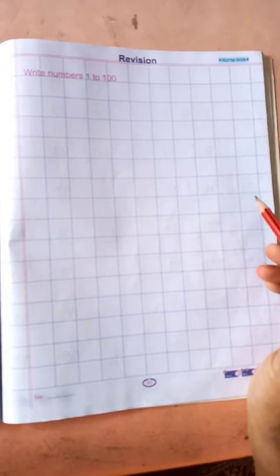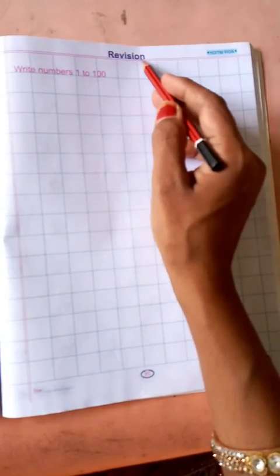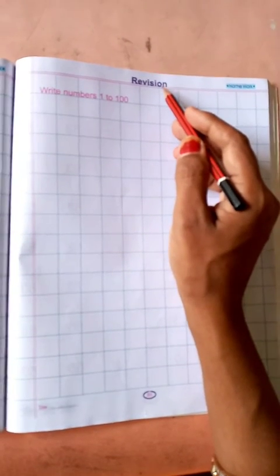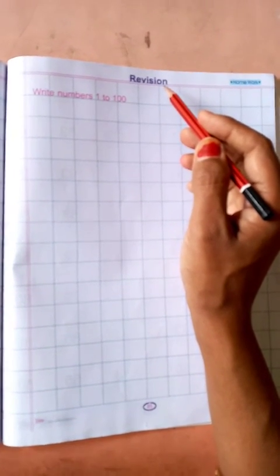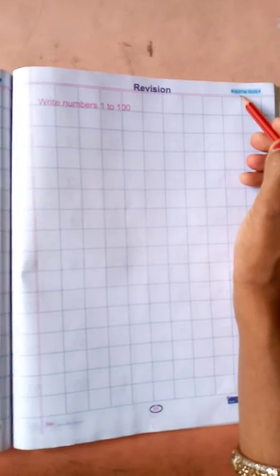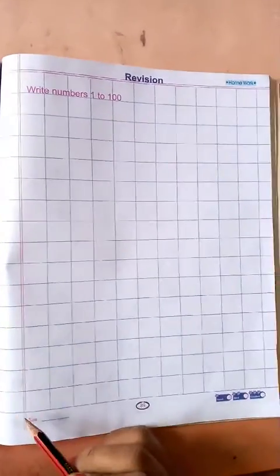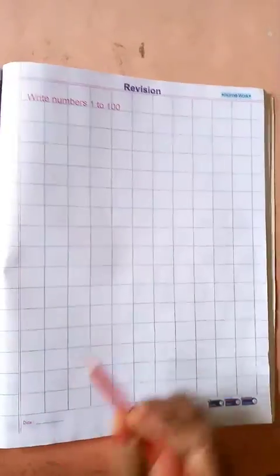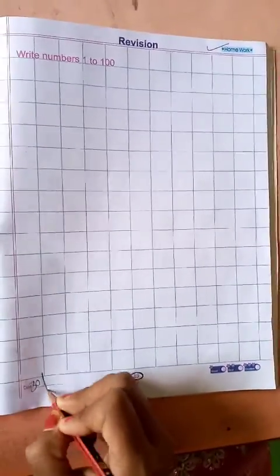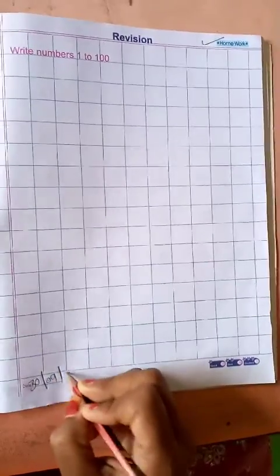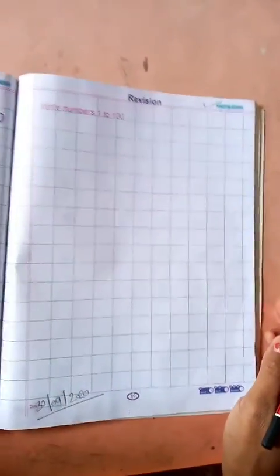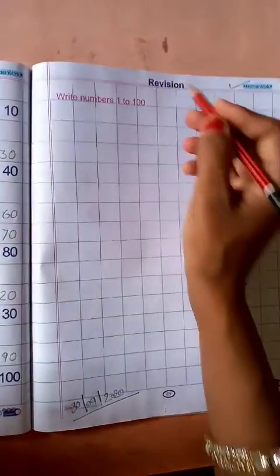Students, next page is our revision. Revision — you have done this in classwork, and homework is also done. Then you are going to click on homework. First, click on homework, then write the date. What is your date today? Today our date is 30/9/2020. Clear? Now we will write the date. This is my revision.